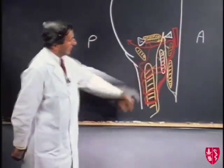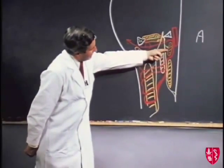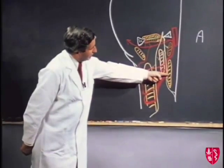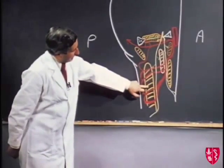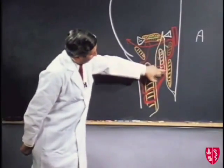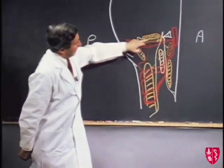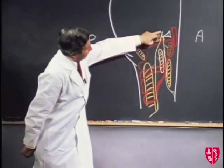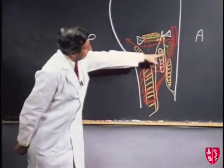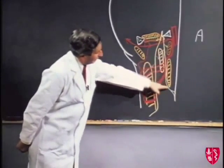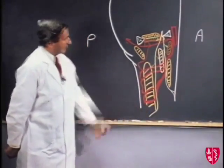So here we have the arrangement of the muscles, arteries, and nerve in the adductor compartment. The muscles are: pectineus, adductor longus, adductor brevis, quadratus femoris at the back, and adductor magnus. The profunda artery, the medial circumflex femoral artery, and the obturator artery provide the blood supply. The obturator nerve — a branch from the lumbar plexus — divides into an anterior division ending by supplying the skin on the medial thigh, and a posterior division ending by supplying the knee joint.